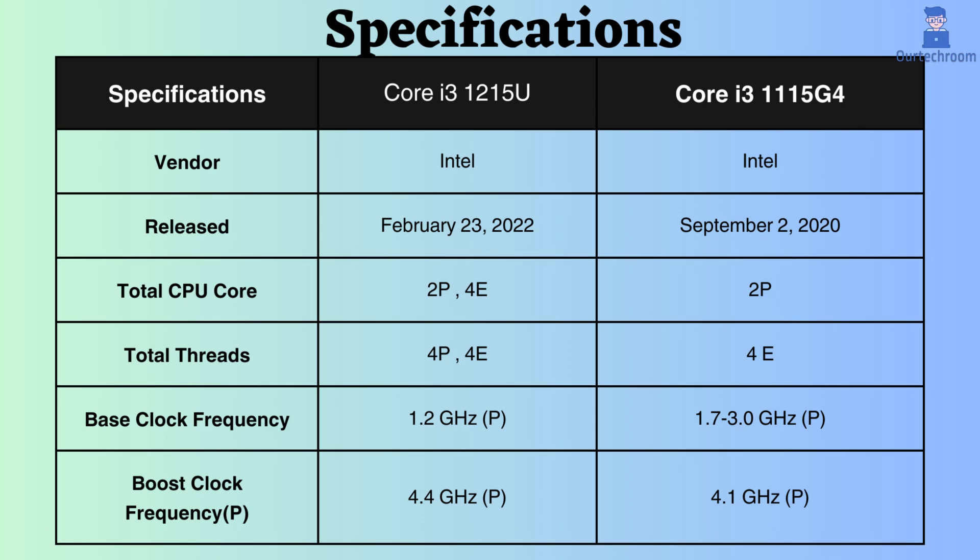The Core i3-1215U was released approximately 16 months after the release of the Core i3-1215G4. The Core i3-1215U has two performance cores and four efficiency cores, whereas the Core i3-1215G4 has only two performance cores. Additionally, the Core i3-1215U has four performance threads and four efficiency threads, while the Core i3-1215G4 has four efficiency threads. With more cores and threads, the Core i3-1215U is better suited for multitasking and multithreaded tasks.